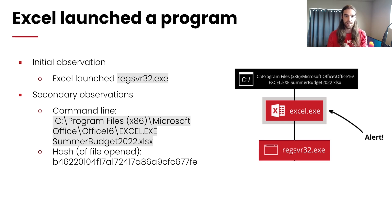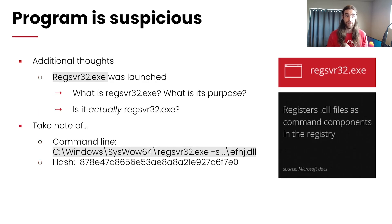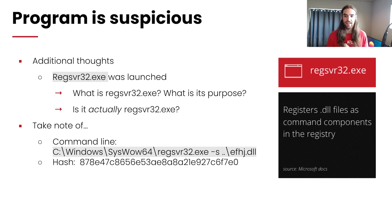Now that we've confirmed Excel did launch a program, we have to answer the second question: is that program suspicious? We see regsvr32 was launched. What exactly is regsvr32 and what is its purpose? If we can answer those questions, we can determine if this is suspicious. We also need to confirm it actually is regsvr32.exe. A simple Google search tells us it is used to register DLL files as command components in the registry — so should Excel be launching regsvr32 to do that? Maybe, maybe not, but that seems a little suspicious.